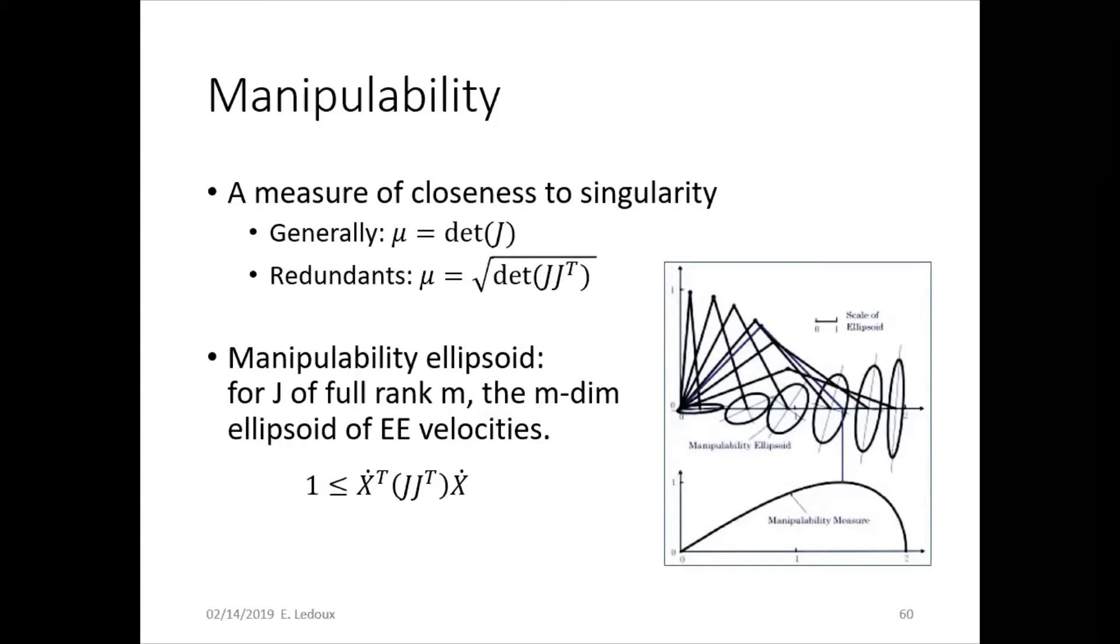But the further away it is from zero, then the more control the robot has over its tip pose. So you can see illustrated in the picture, then when the manipulability is zero, the ellipsoid of its possible motion is really skinny. But then in the middle, when manipulability is a lot higher than zero, it can move in lots of different directions.